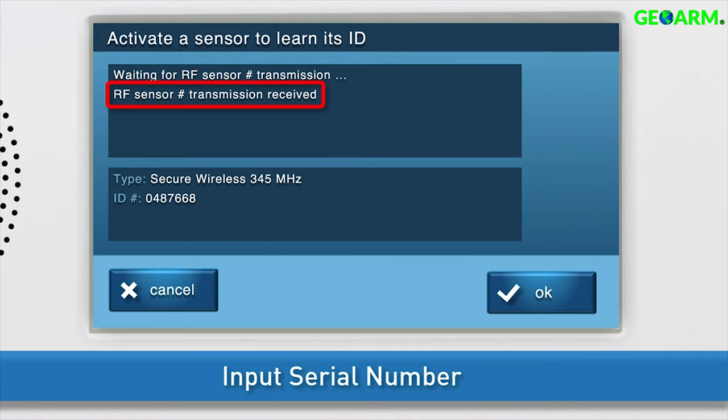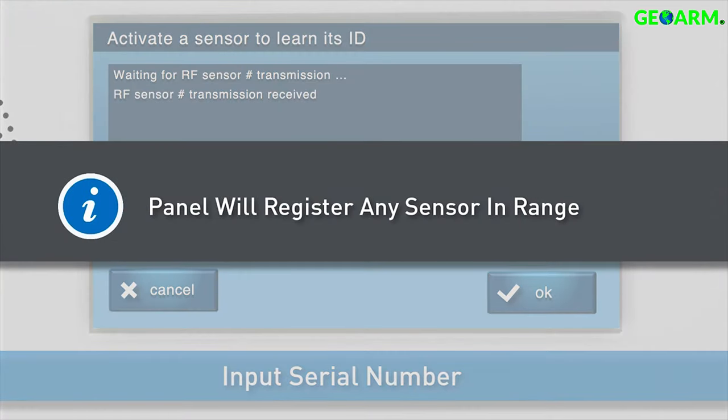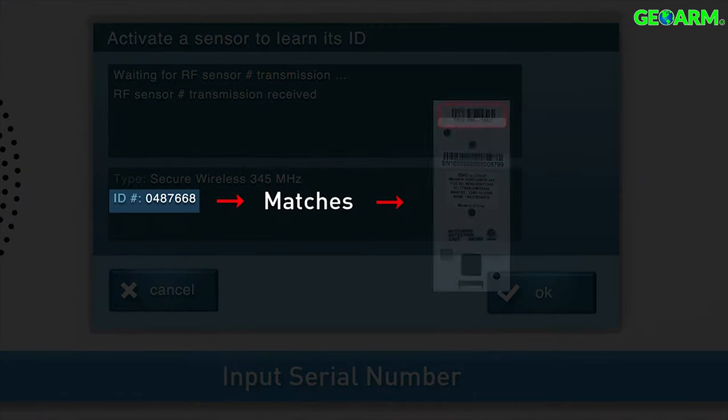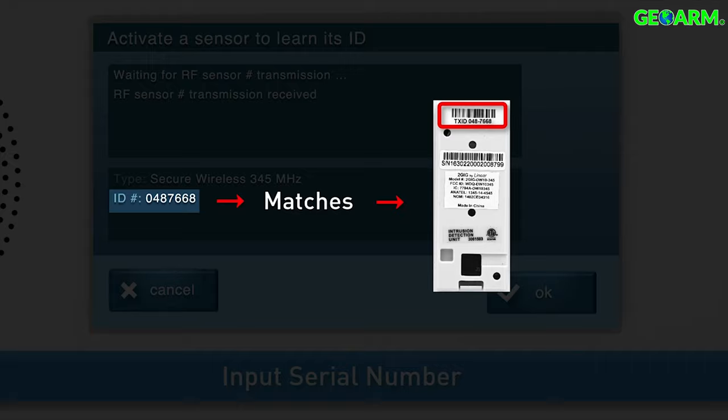You'll see a confirmation message that the transmitter was received, and you'll see the type and ID number displayed on screen. Note, the panel will register any sensor within range, so you'll need to make sure the ID number on screen matches the serial number, or TX ID, of the thin door window contact you're adding.